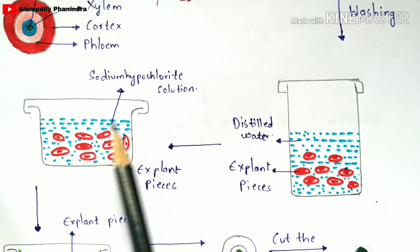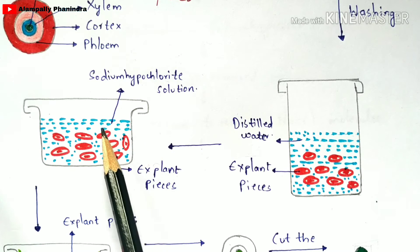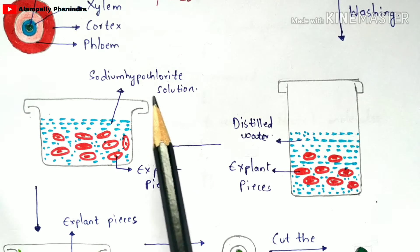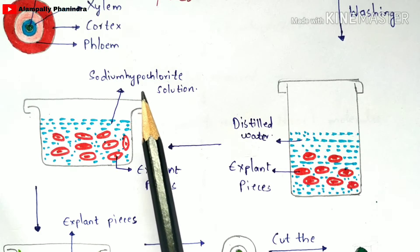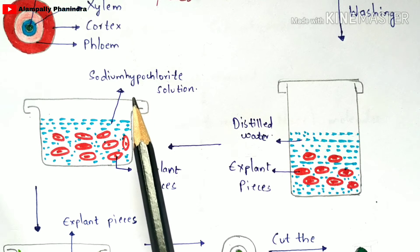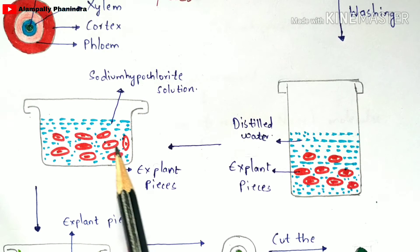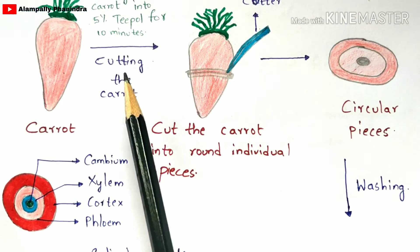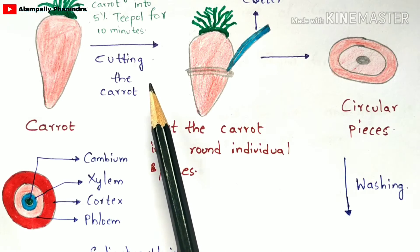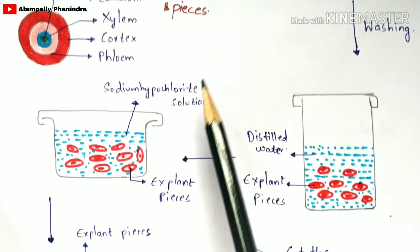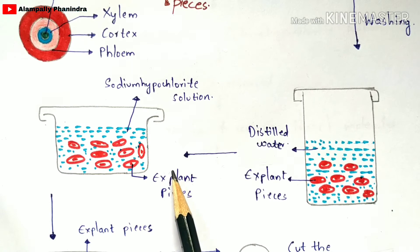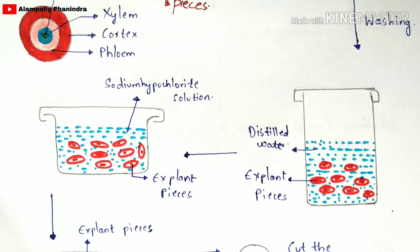Sodium hypochlorite solution plays a major and vital role here. It removes all bacteria — including minor bacteria and small bacterial particles — present on the surface of the explant pieces. While the Teepol solution removes only about 75% of bacteria, the sodium hypochlorite solution removes 100% of the bacteria, making the explant pieces completely free from bacteria.